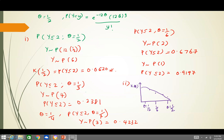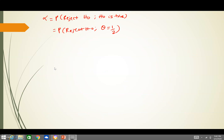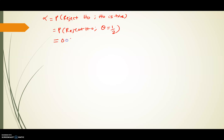Finally, we find the significance level of the test. The significance level alpha is defined as the probability of rejecting H0 when H0 is true. Here, when theta = 1/2 (H0 true), the probability is 0.0620. So alpha = 0.0620 is the significance level of the test. That concludes our example.